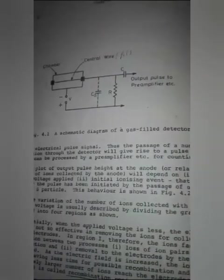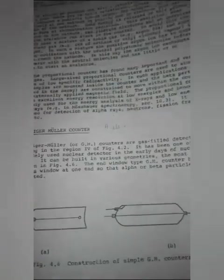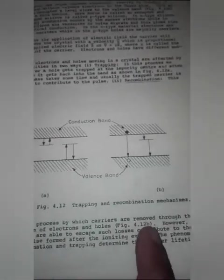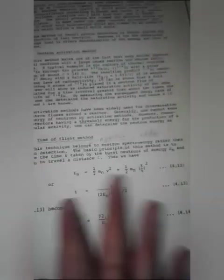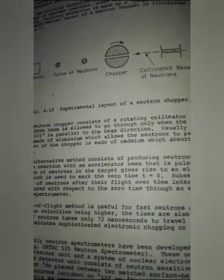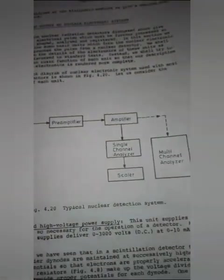Chapter 4 on nuclear radiation detectors includes a diagram of a gas-filled detector, a Geiger-Müller counter, and illustrations of drifting and recombination mechanisms. Also shown is an experimental layout of a neutron chopper and a typical nuclear detection system.